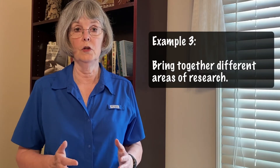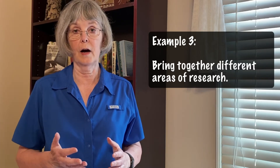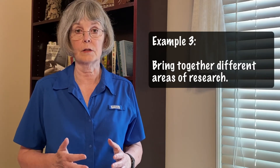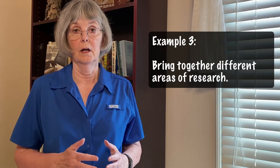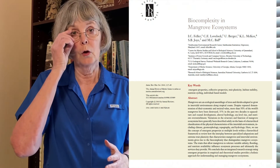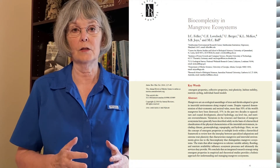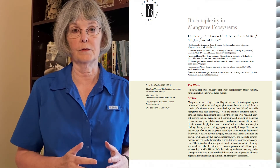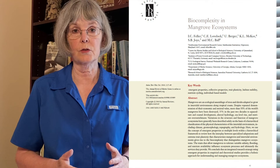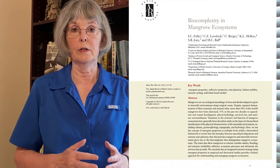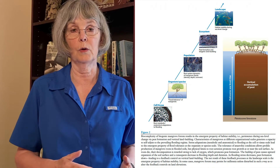A review may bring together different areas of research — for example, different levels of hierarchy in an ecosystem — to offer an integrated view of a broader topic. In one review, we described how various processes at different hierarchical scales lead to the emergent properties of mangrove forests. Such a framework provides a clear structure for a review in which aspects ranging from cellular to landscape-level scales are explored.